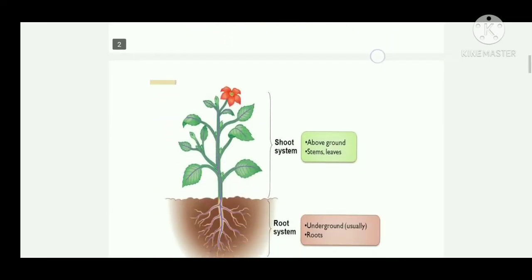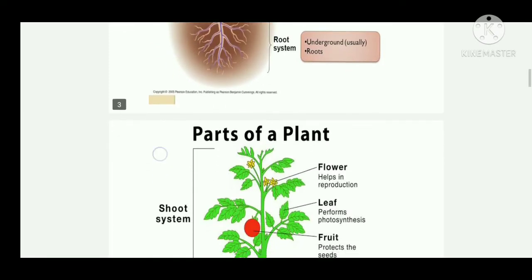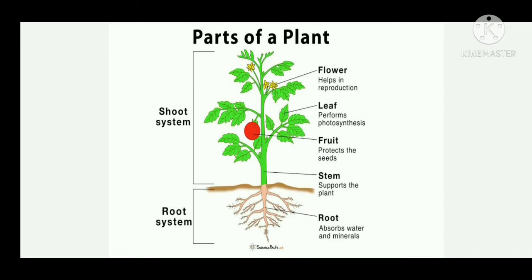All the parts of the plant that we have learned can be broadly divided into two parts. One is the root system, which is underground and comprises of the root. The other is the shoot system, which is above the ground and comprises of all the other parts including stems, leaves, flowers, fruits, etc. So the root system is the part of the plant below the ground, and the shoot system is the part above the ground, made up of flower, leaf, fruit, stem, etc.